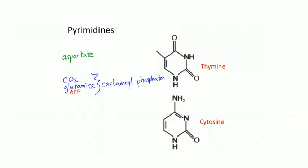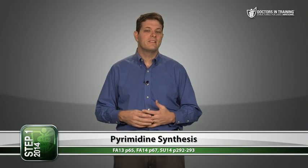Purines and pyrimidines are similar molecules but the body makes them in totally different ways. For pyrimidines, you start with a base called orotic acid and then add a sugar. For purines, you start with a sugar and then add the base. Pyrimidine synthesis starts with carbamoyl phosphate, made from glutamine, CO2, and ATP.